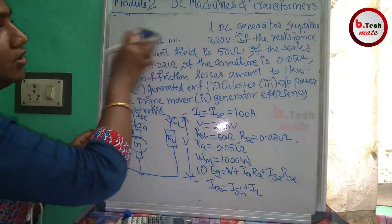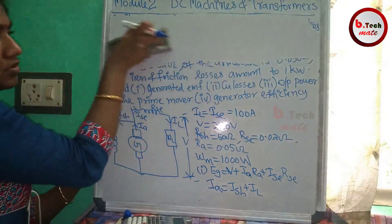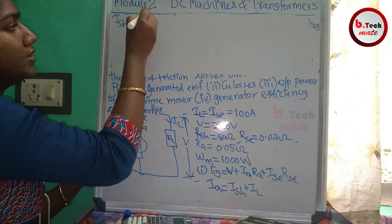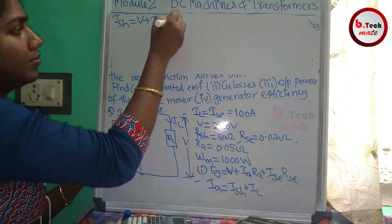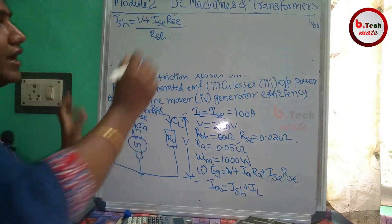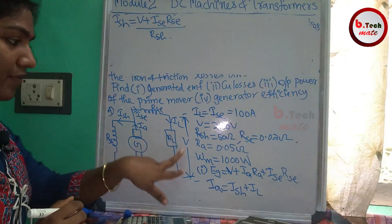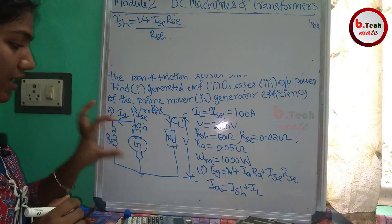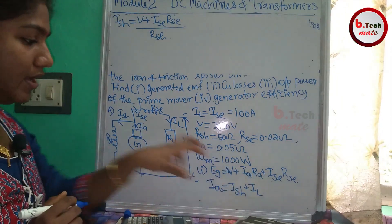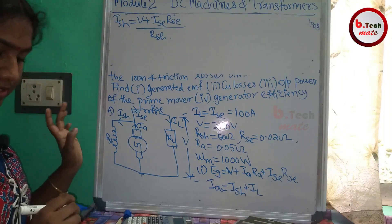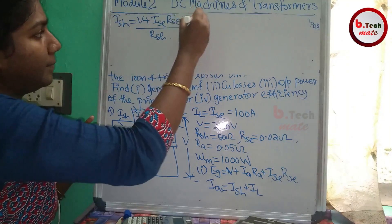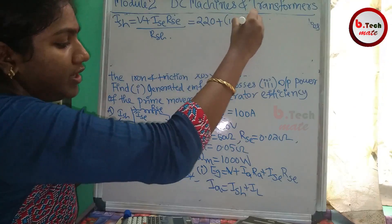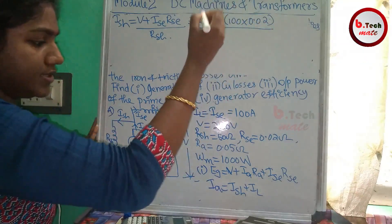Now let's address Part B: What is ISH? ISH equals V plus ISC·RSE, divided by RSH. Substituting: 220 plus ISC·RSE, where ISC is 100 and RSE is 0.02, divided by RSH which is 50.